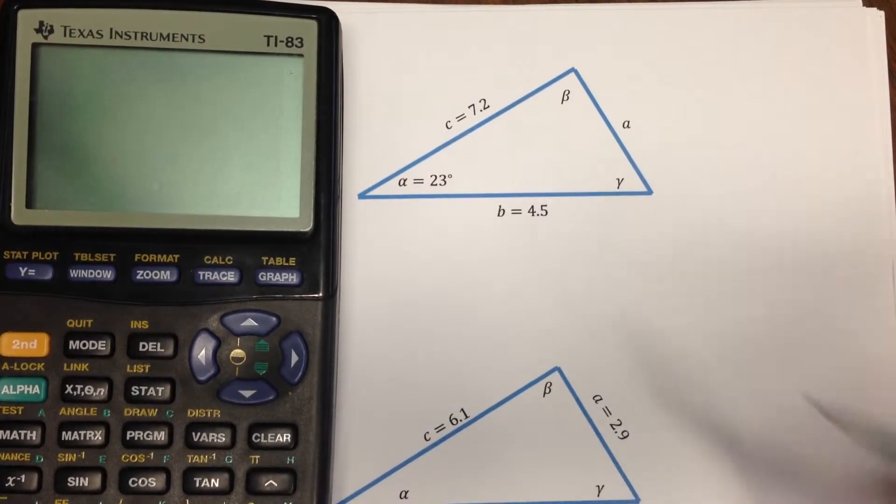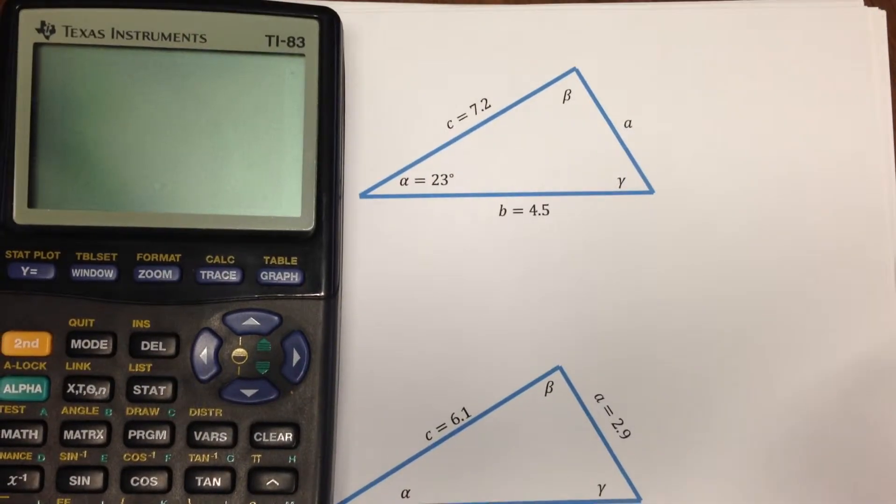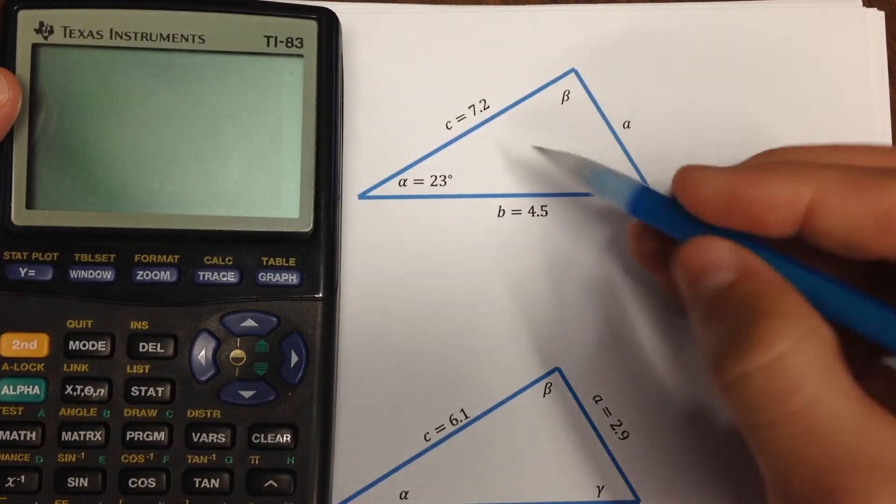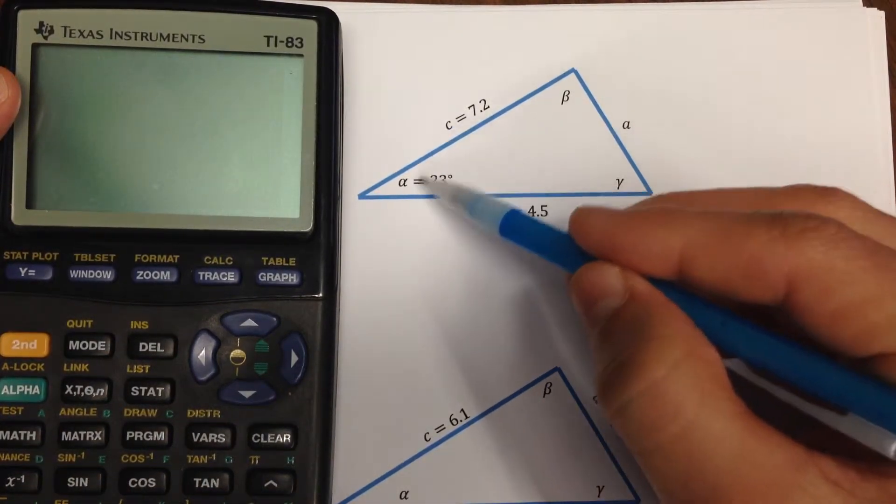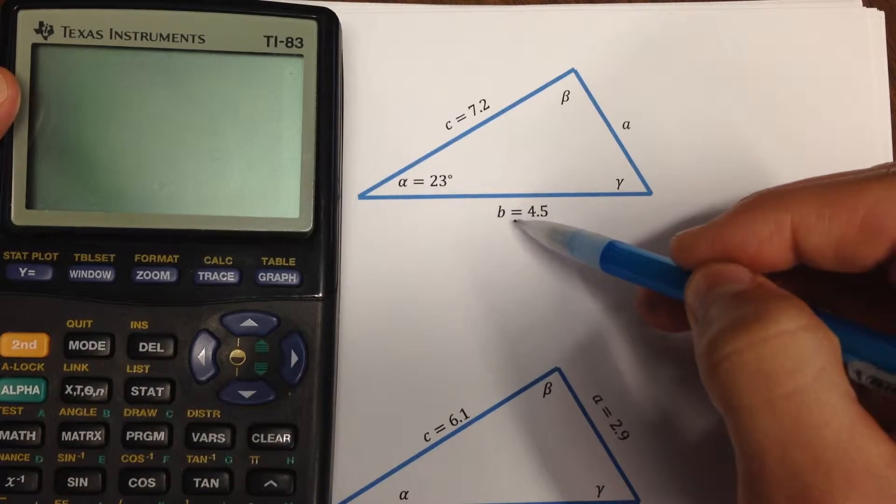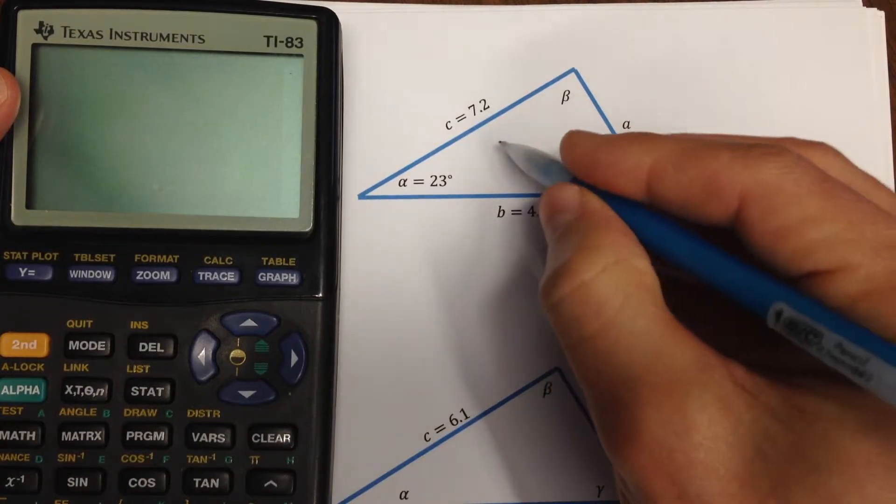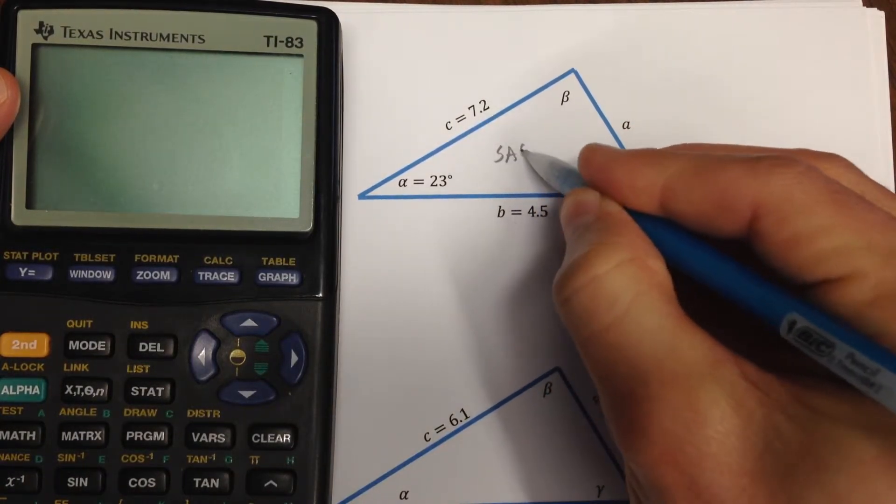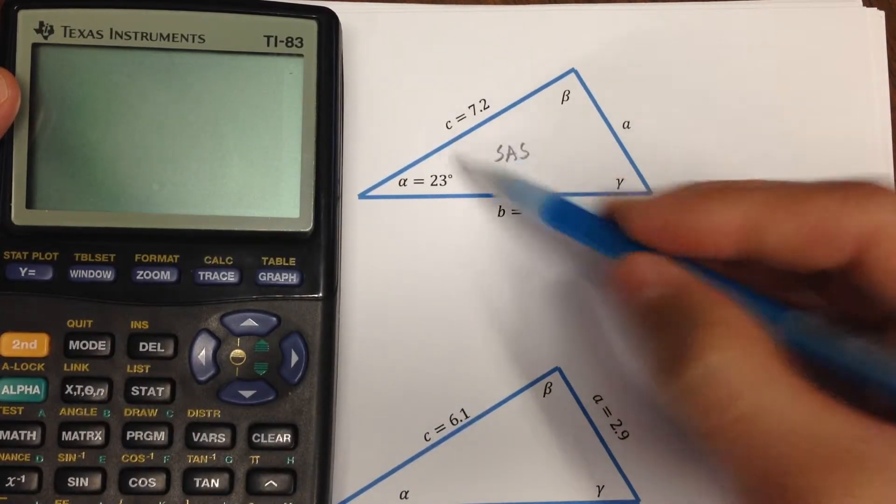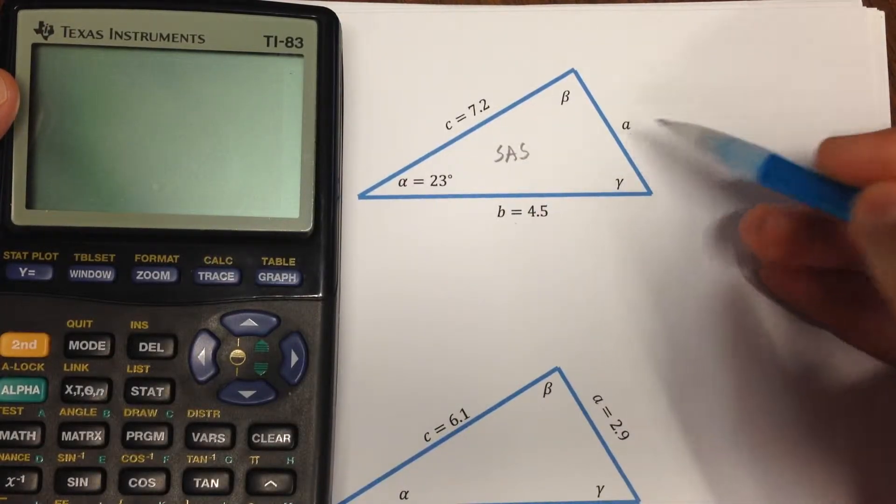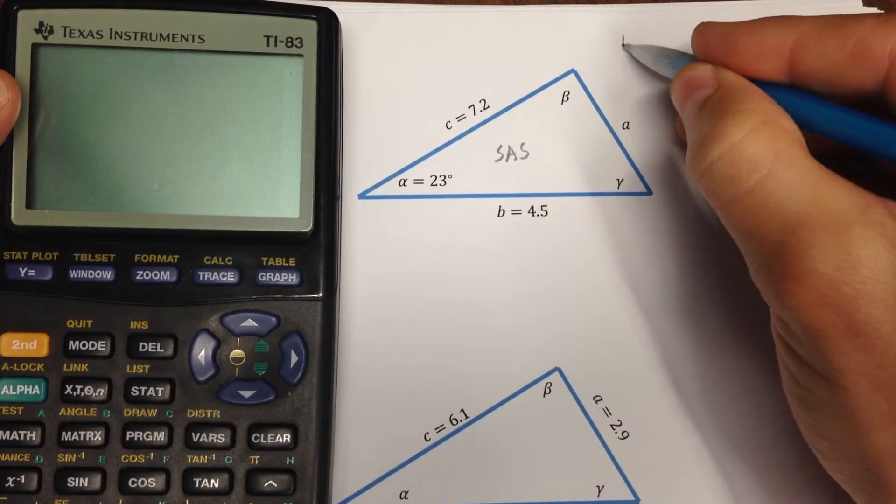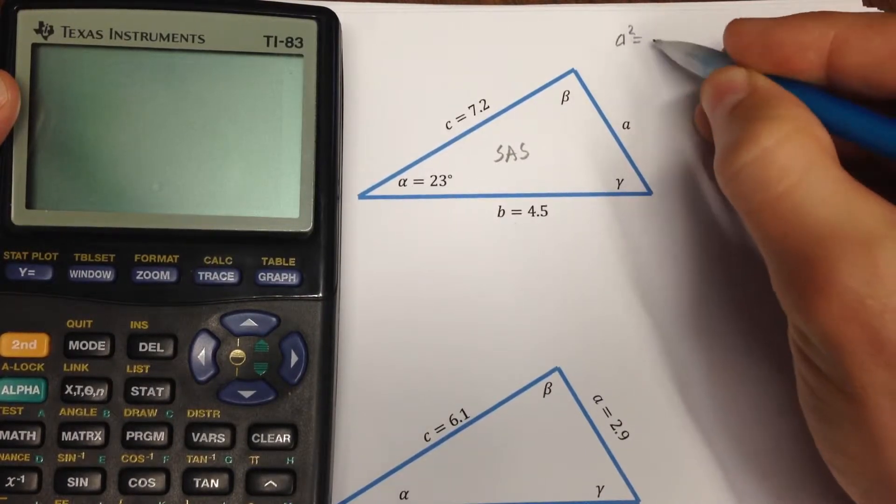I'm going to go about using law of cosines to solve these three triangles. The first one, notice that I have a side length, the adjacent angle, then the adjacent side. So this is typically classified as side angle side. My strategy is going to be first to find side length a, so I'm going to write that form of the law of cosines.